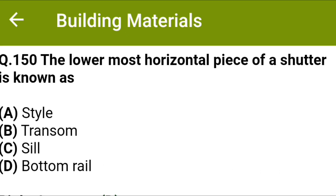The lowermost horizontal piece of the shutter is known as: option A style, option B transom, option C sill, option D bottom rail. The correct answer is option D, bottom rail. Thank you.